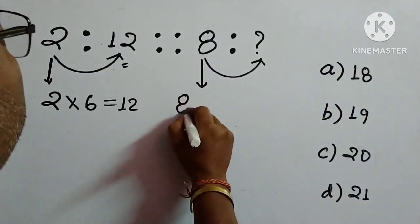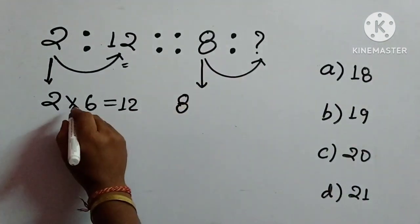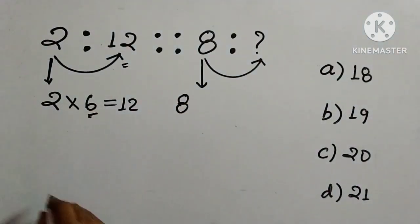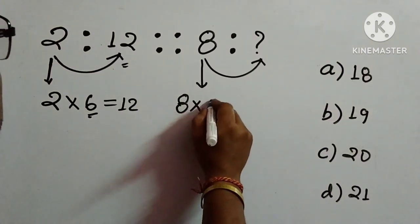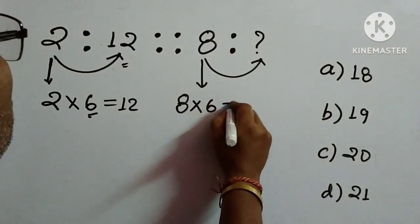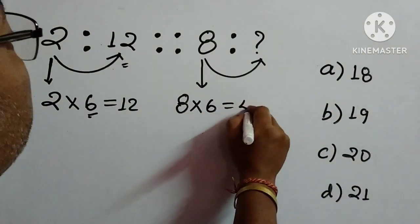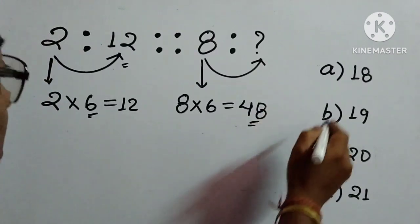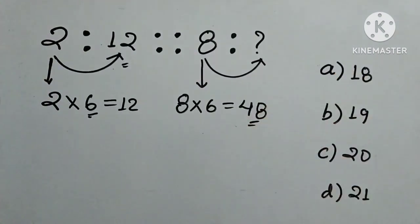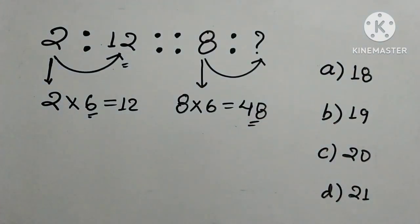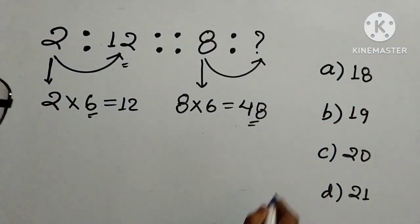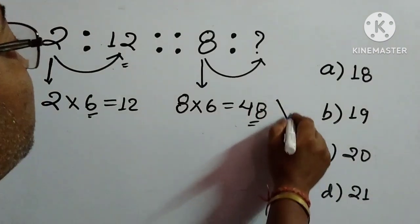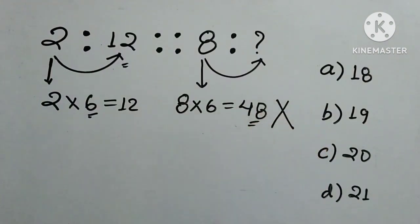We consider 8 and, since we multiplied by 6 on the left side, we multiply 8 by 6 as well. So 8 into 6 is 48. But looking at the options, 48 is not given. So we cannot adopt this process.